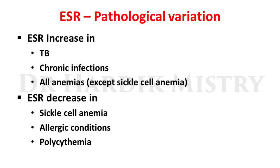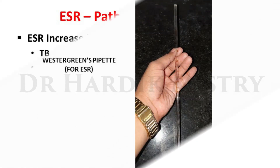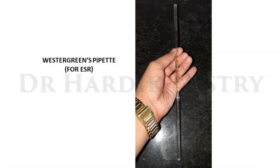ESR pathological variations — these are absolutely abnormal conditions. ESR increases in tuberculosis, chronic infections, and all anemias except sickle cell anemia. ESR decreases in sickle cell anemia, allergic conditions, and polycythemia. This is the Westergren pipette used for ESR, and the pipette is open from both ends.